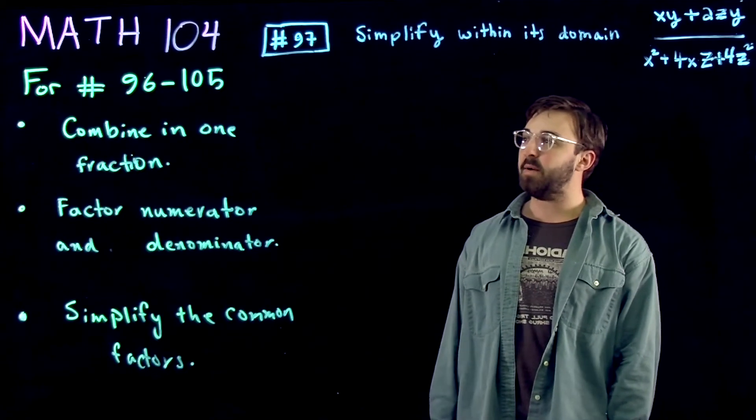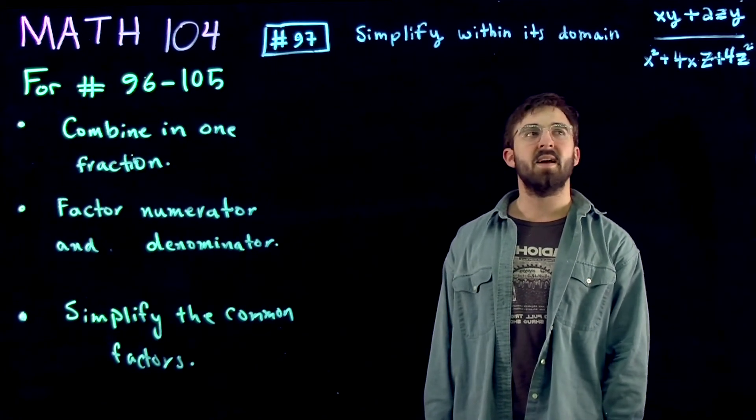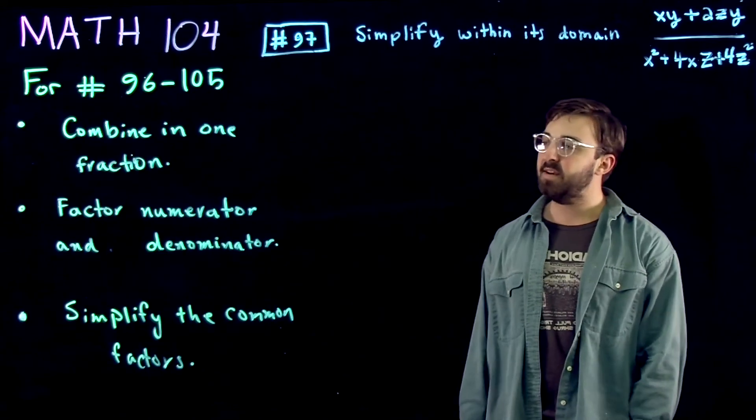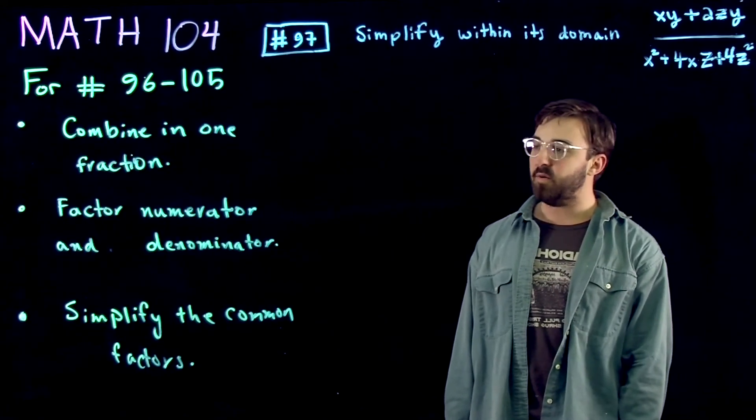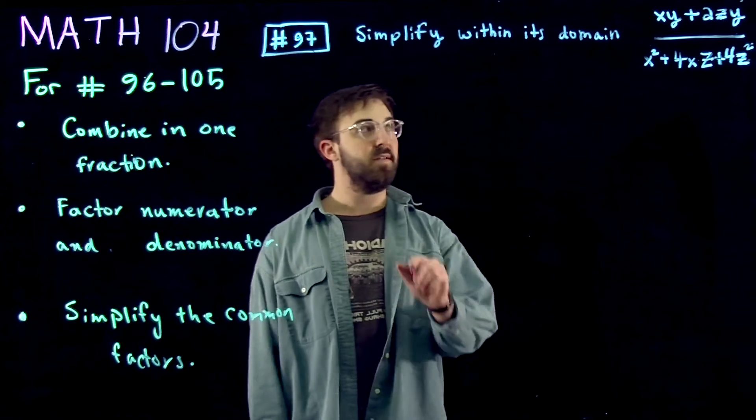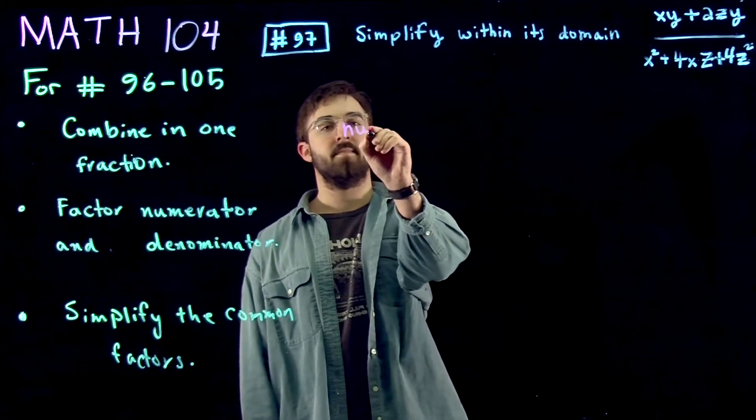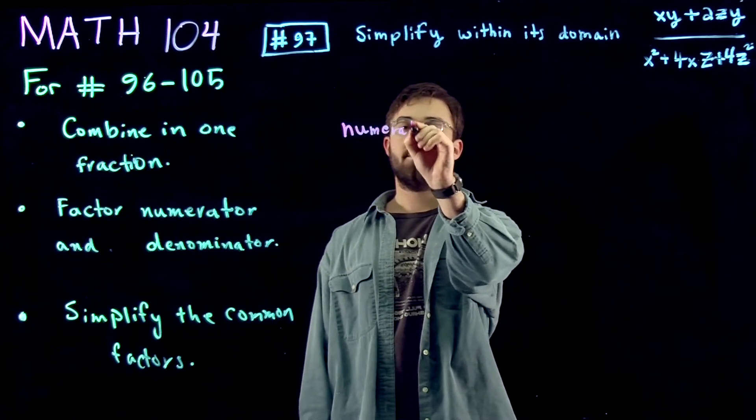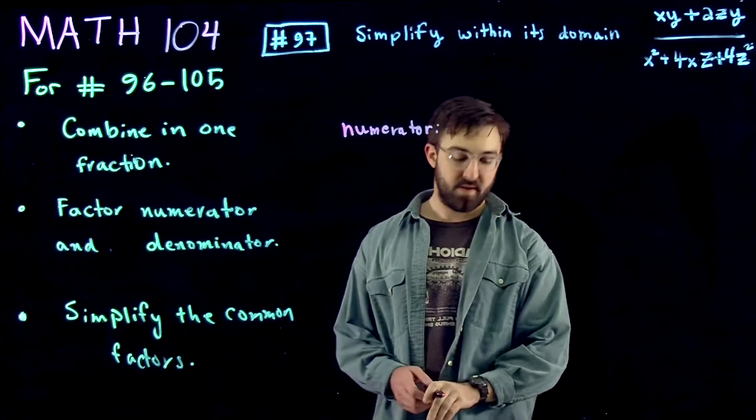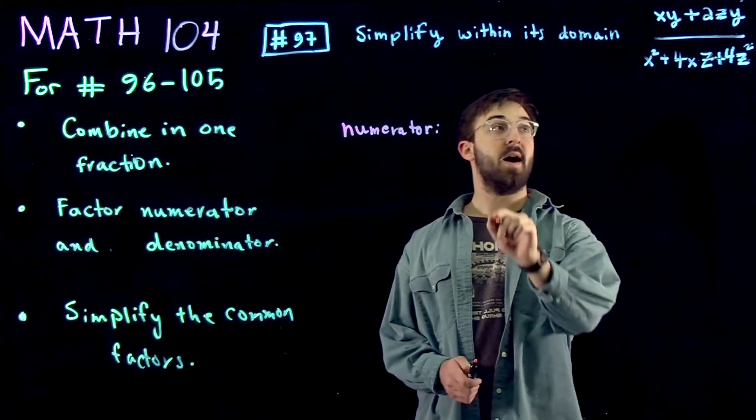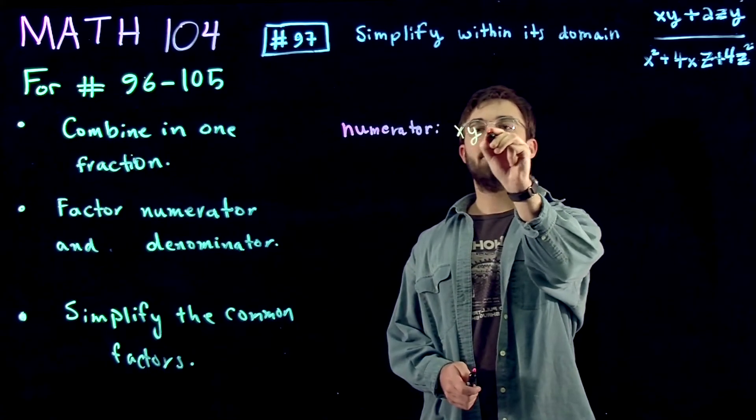So step number one is to combine into one fraction. As you can see, we already have one fraction. So the next step would be to factor the numerator and the denominator. For the numerator, we've got xy plus 2zy.